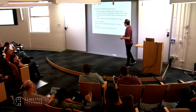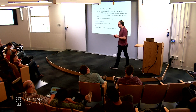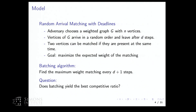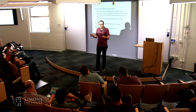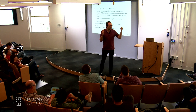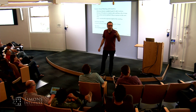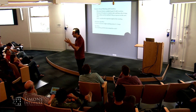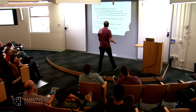Here's the question: does batching yield the best competitive ratio for this problem? The competitive ratio is the worst-case ratio between the solution of the algorithm and the optimum solution. You run your algorithm, get some matching with a value, then consider what if you knew everything — the arrival of every vertex — and computed the maximum weight matching. Look at the ratio of the two, and look at the worst case over all possible instances and all different graphs — that gives you the competitive ratio.